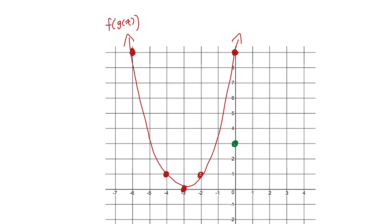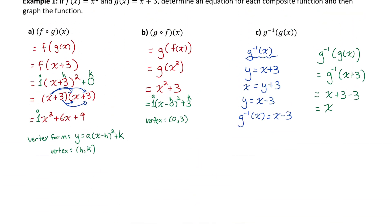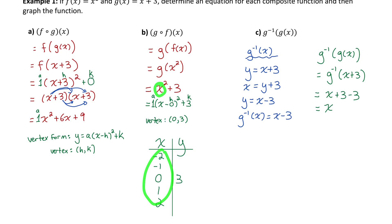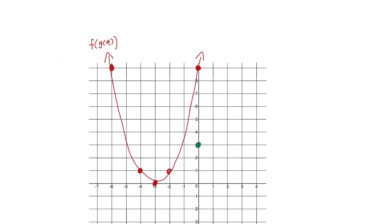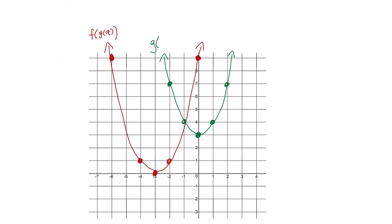To get a more accurate shape, let me make a small table of values. The vertex is at 0, 3 — I'll put that in the middle, and pick a couple of points to the left and right. Substituting 1 for x: 1 squared plus 3 is 4. By symmetry, the point to the left of the vertex will also be at y equals 4. Substituting 2: 2 squared plus 3 is 7. Using those points I can get a more accurate picture. That's the graph of g of f of x.